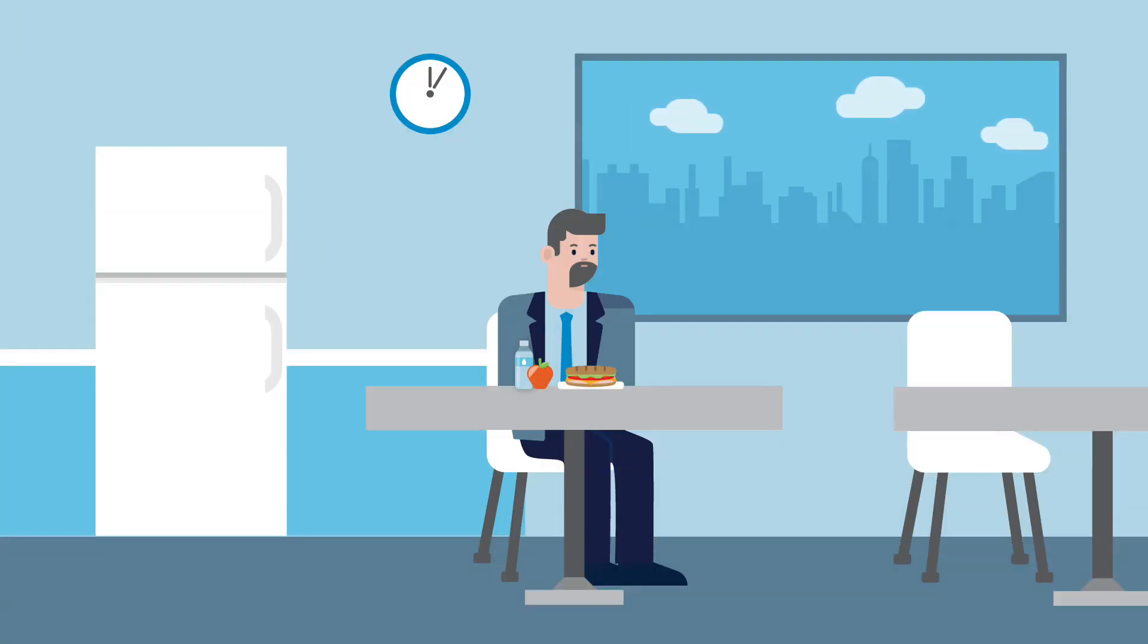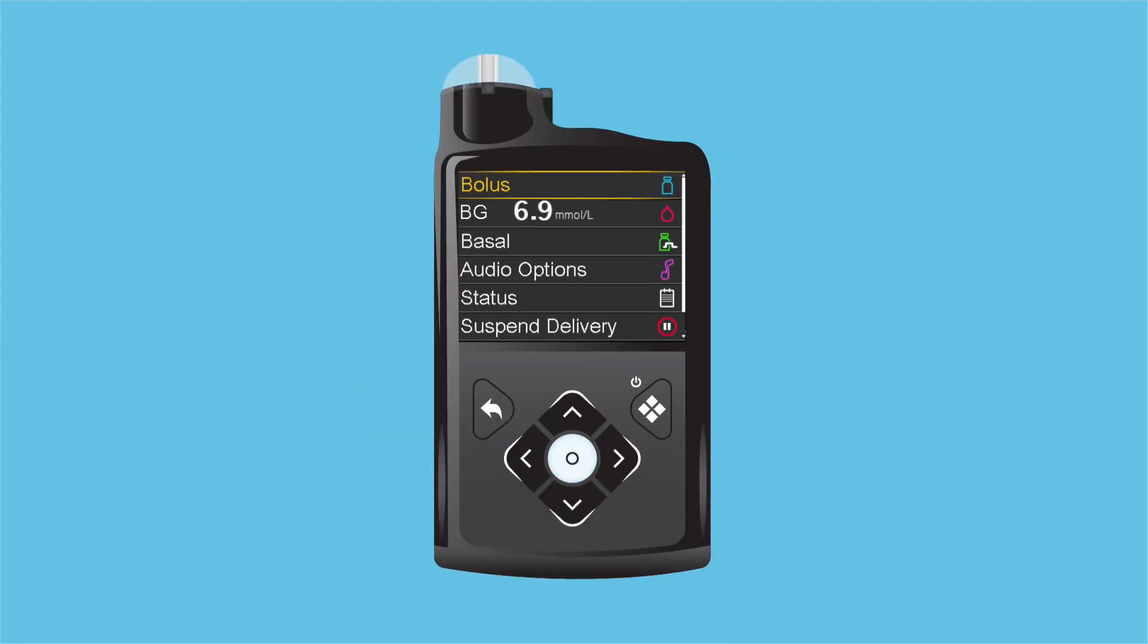It's lunchtime, and Andy wants to try using the Bolus Wizard feature. He tests his BG and confirms it on his pump. Andy selects Bolus from the main menu.